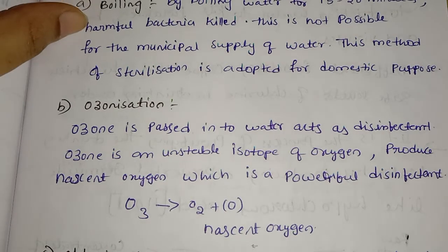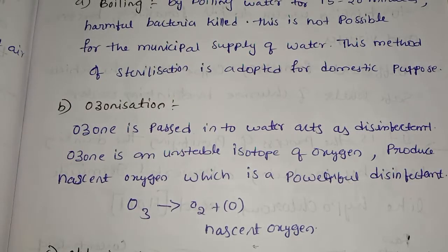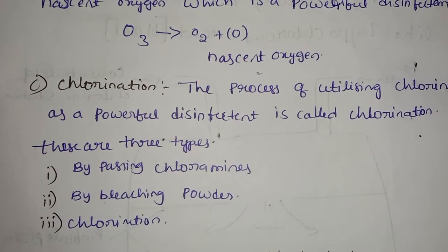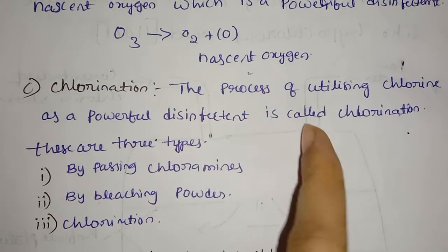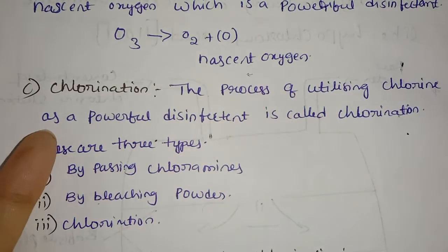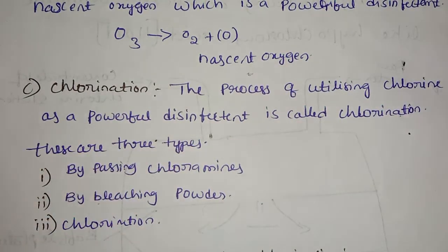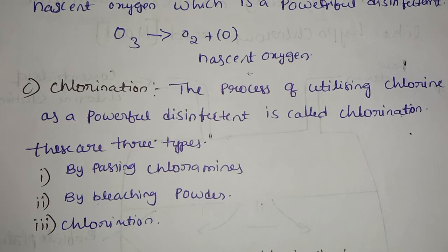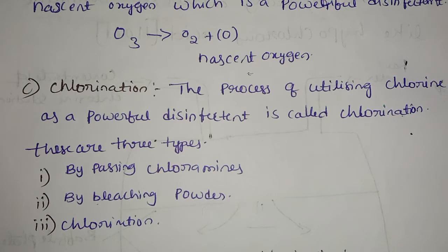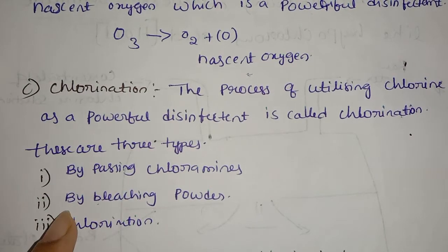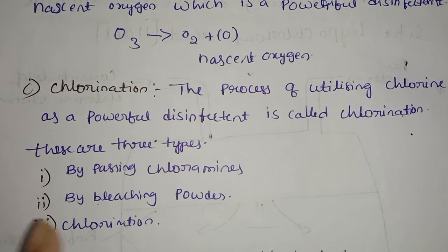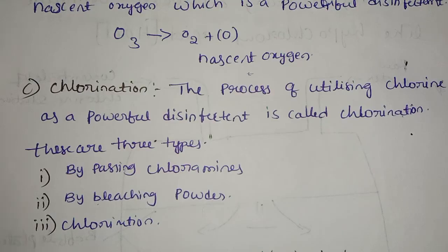Another method is boiling, then ozonization, then chlorination. Chlorination is the process of utilizing chlorine as a powerful disinfectant. Chlorine is used in the water — by passing chloramines or bleaching powder — to kill bacteria in tanks.